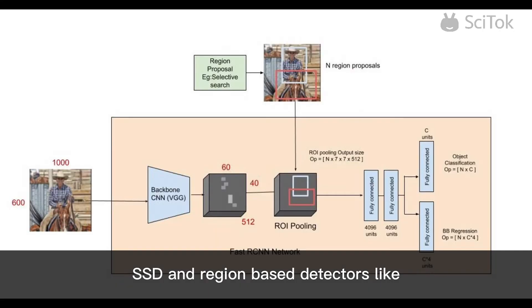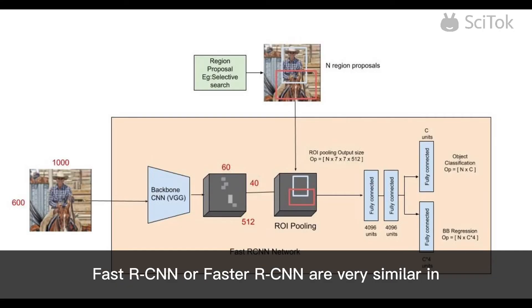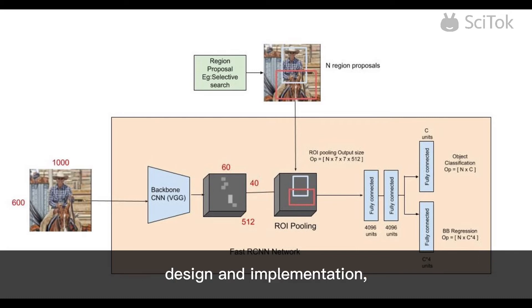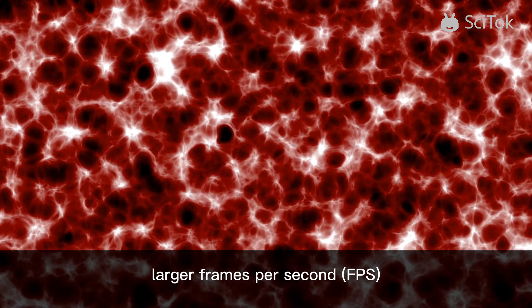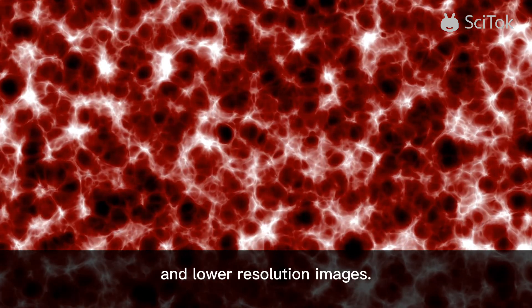SSD and region-based detectors like FastRCNN or FasterRCNN are very similar in design and implementation, but SSD has shown to work efficiently with larger FPS and lower resolution images.